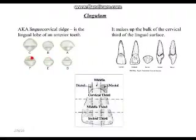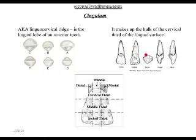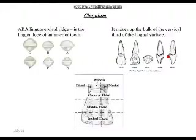You can see the cingulum from the incisal edge looking downwards. From the side view of the tooth, you can see this blockiness on the lingual surface — that's the cingulum. It makes up the bulk of the cervical third of the lingual surface.